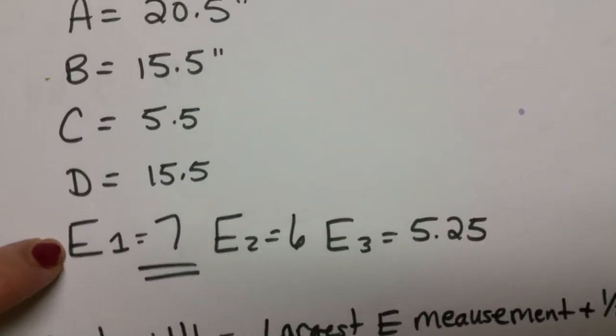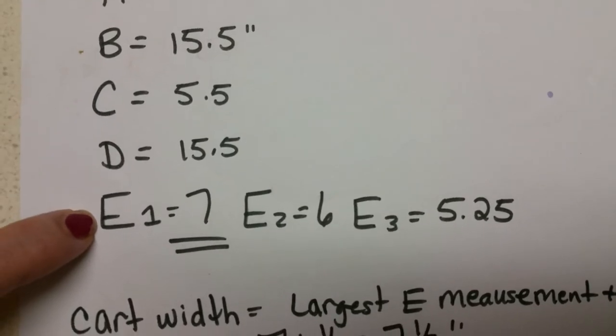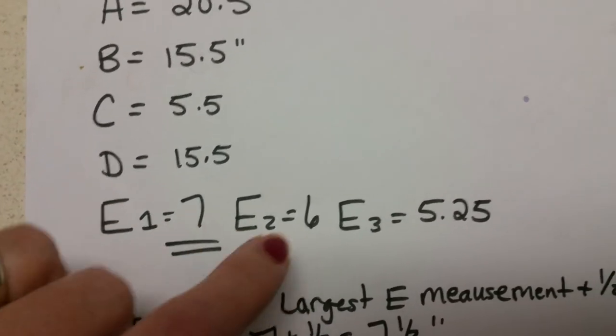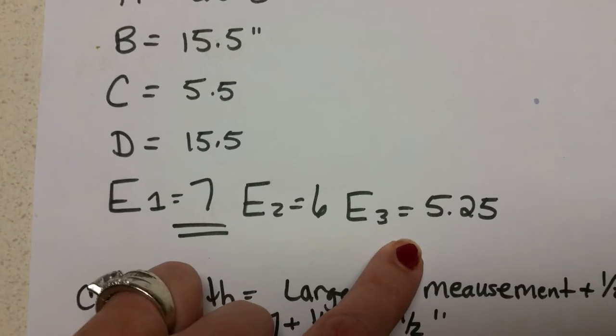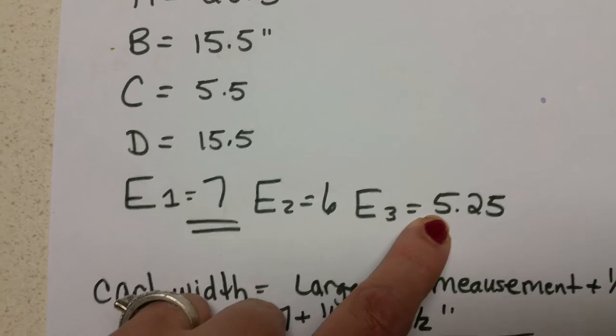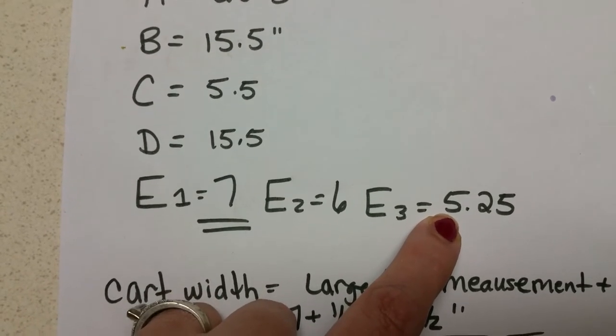E is the measurement across the dog. E1 is at the shoulders. E2 is at the ribs. E3 is at the hips. E3 is going straight across the dog.